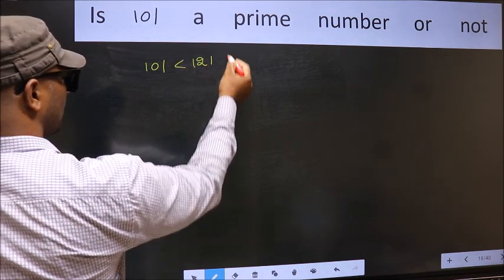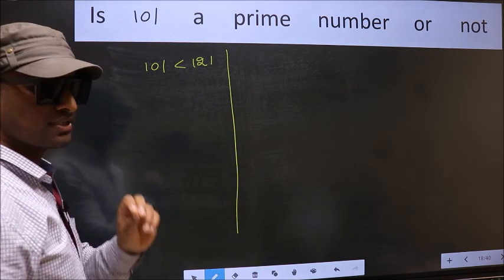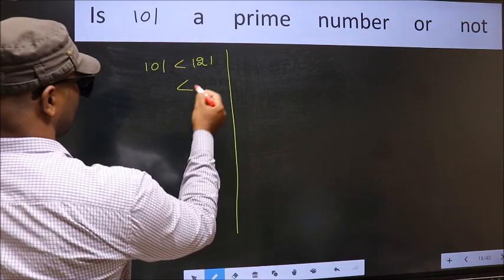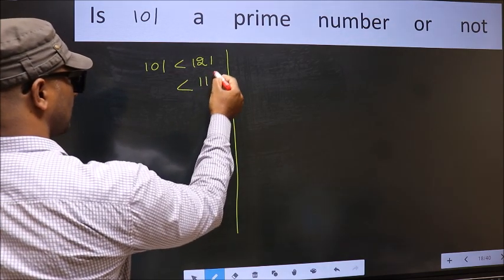Perfect square number. This is your step 1. Next, 121 is 11 square.